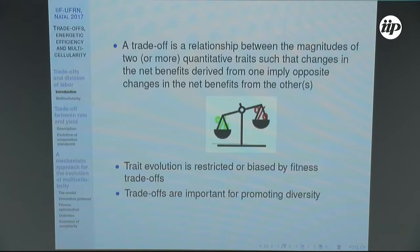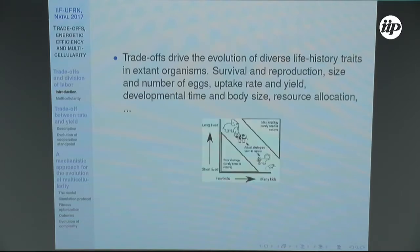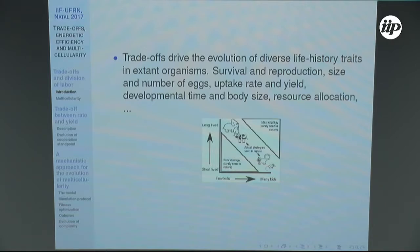Trade-offs are not bad — they are very important in biology and are responsible for most of the biodiversity we have on Earth. You can easily observe trade-offs when looking at life history traits: a trade-off between survival and reproduction rate, between size and number of eggs. For example, organisms that live longer usually have few offspring, while smaller organisms usually have many.